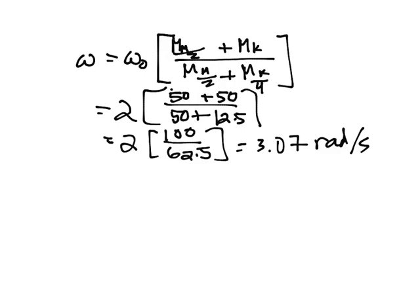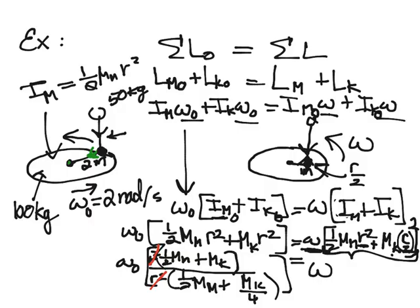3.07 compared to the initial 2 radians per second — the system sped up. When the kid moved in towards the center of the merry-go-round, they reduced the total moment of inertia I, and if you reduce the total moment of inertia, you have to increase omega.